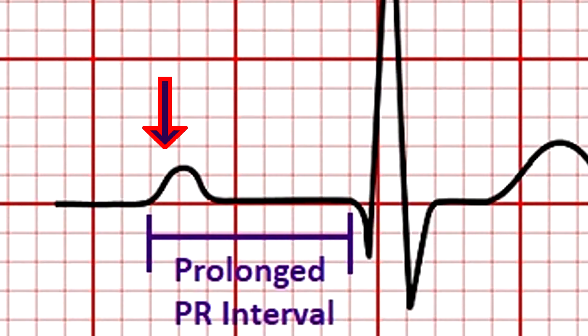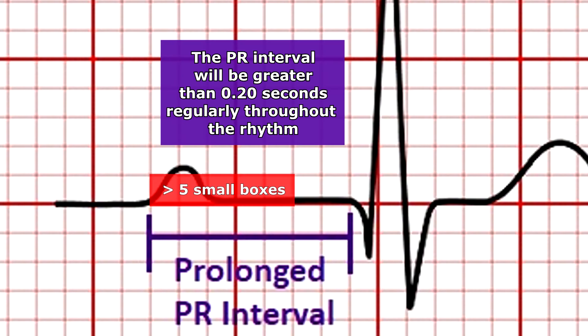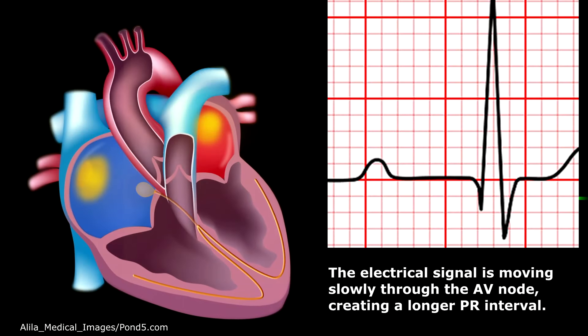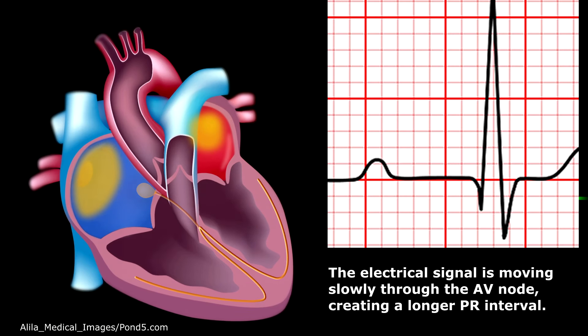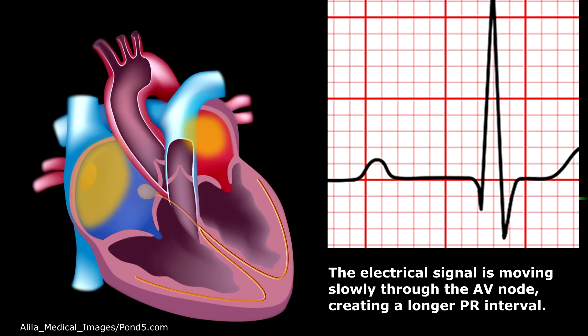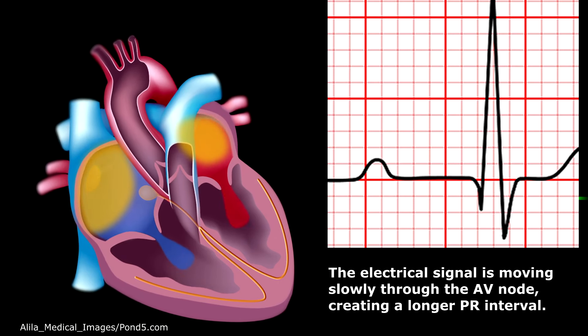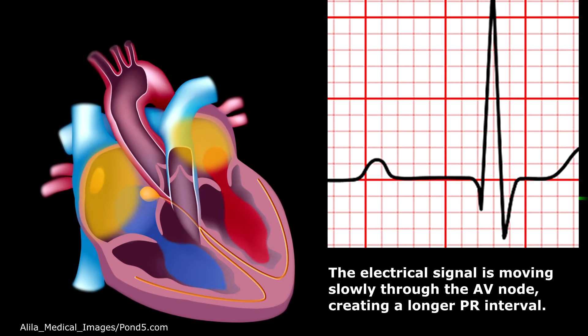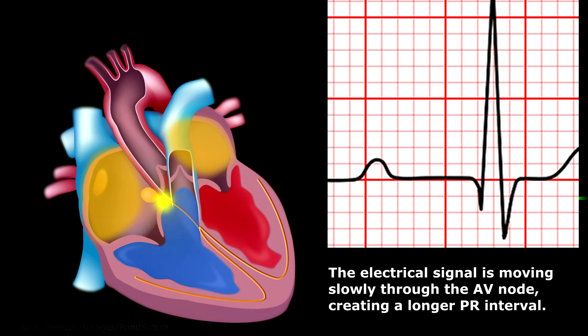It actually has something up with its PR intervals. The PR intervals will be prolonged — hence they will be lengthened. With this rhythm the PR interval will be greater than 0.20 seconds and this will occur regularly throughout the rhythm. The reason this is occurring is because the electrical signal is able to go down through the atria to the ventricle, giving you the P wave and the QRS complex, but it is doing this slowly through the AV node, which creates that longer PR interval.